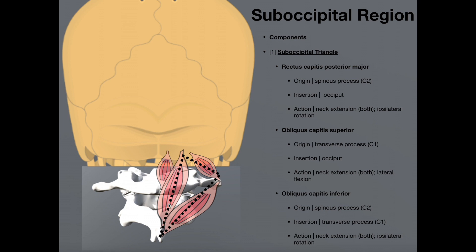The first muscle is this long muscle right here, called the rectus capitis posterior major. If we look at this picture, we can actually deduce the origins and insertions. For all of these muscles, the origins are inferior and the insertions are superior. The rectus capitis posterior major originates on the spinous process of the axis, or C2, and it extends upward to insert on the occiput. Again, all of these muscles have a counterpart on the left side, so they are bilateral muscles.